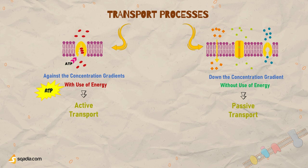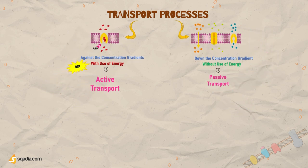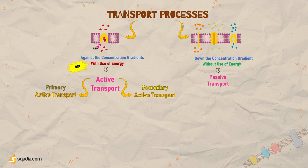The active transport mechanisms are divided into two categories: primary active transport and secondary active transport. Primary active transport is the one that directly uses a source of energy, such as ATP, to move molecules across a membrane against their gradient.